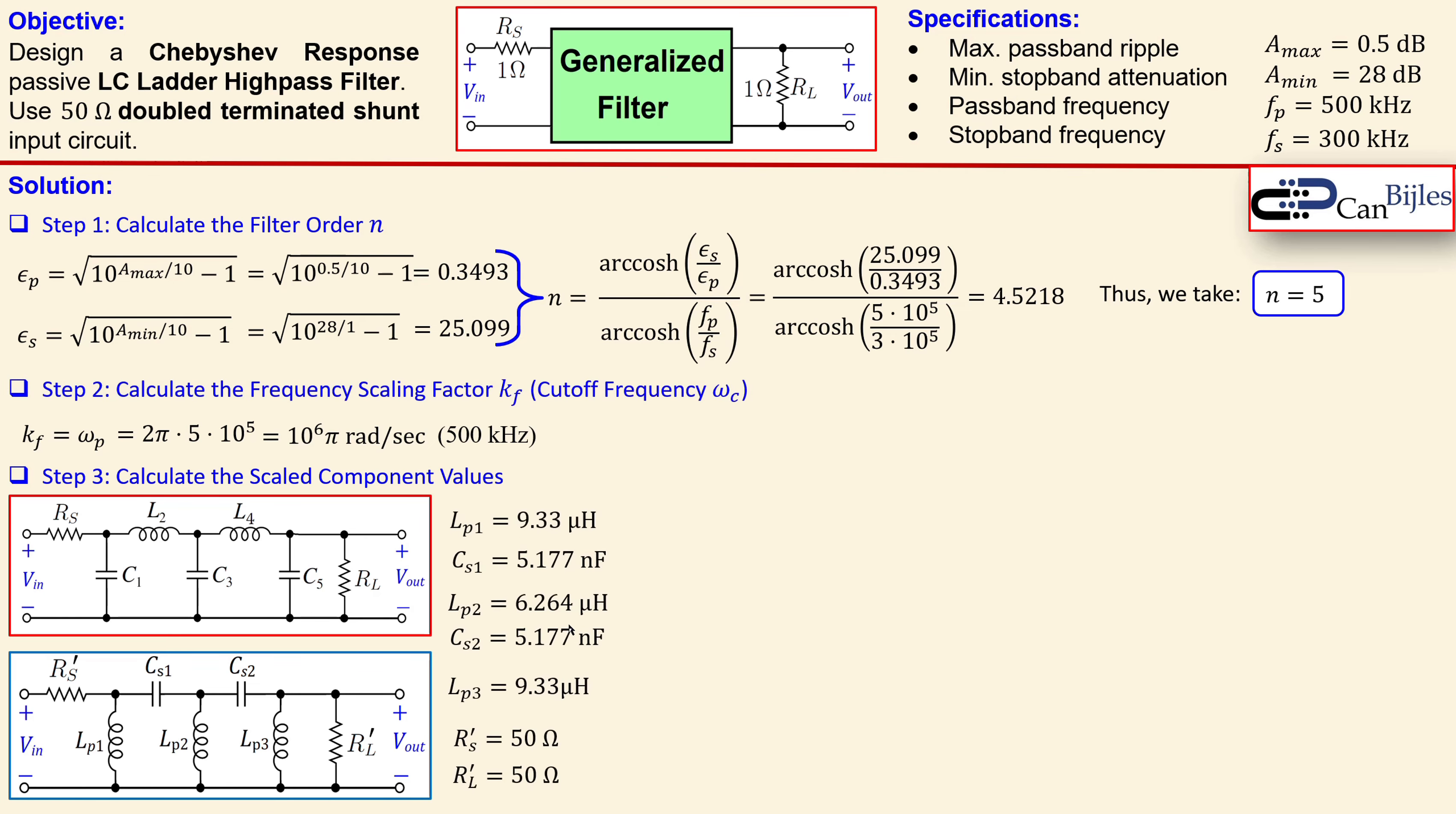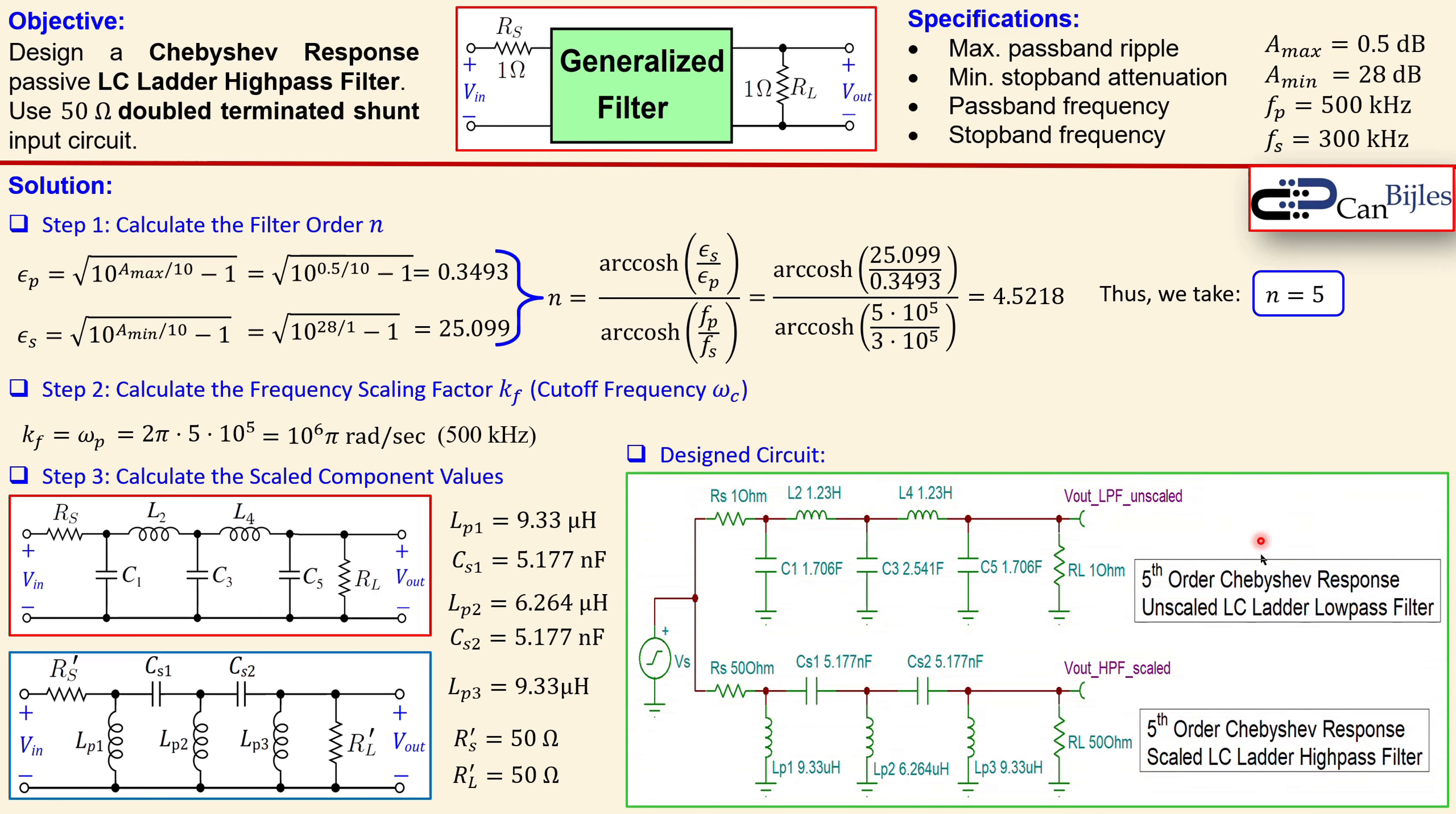So let's collect them together. Here you see all the values: lp1, cs1, lp2, cs2, lp3, and also the rs and rl primes. This is now the design circuit. You see here the prototype low pass filter fifth order, and this is now the designed fifth order high pass filter for the Chebyshev response. You see the values, lp1 and lp3 are exact same, lp2 is shown here, and cs1 and cs2 are exact same. Okay, let's move on.